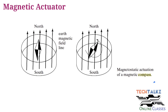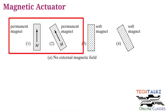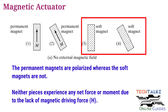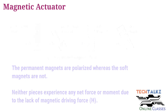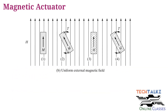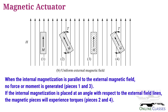We can use the same principle, with some modifications, in microscale actuators and sensors. Looking at the figure: this is the hard magnet case and this is the soft magnet case. When we do not apply an external magnetic field, there is no torque or force. In the second case, we apply an external magnetic field. The hard magnet already has an internal magnetic field. When the internal and external magnetic fields are aligned, there is no torque.